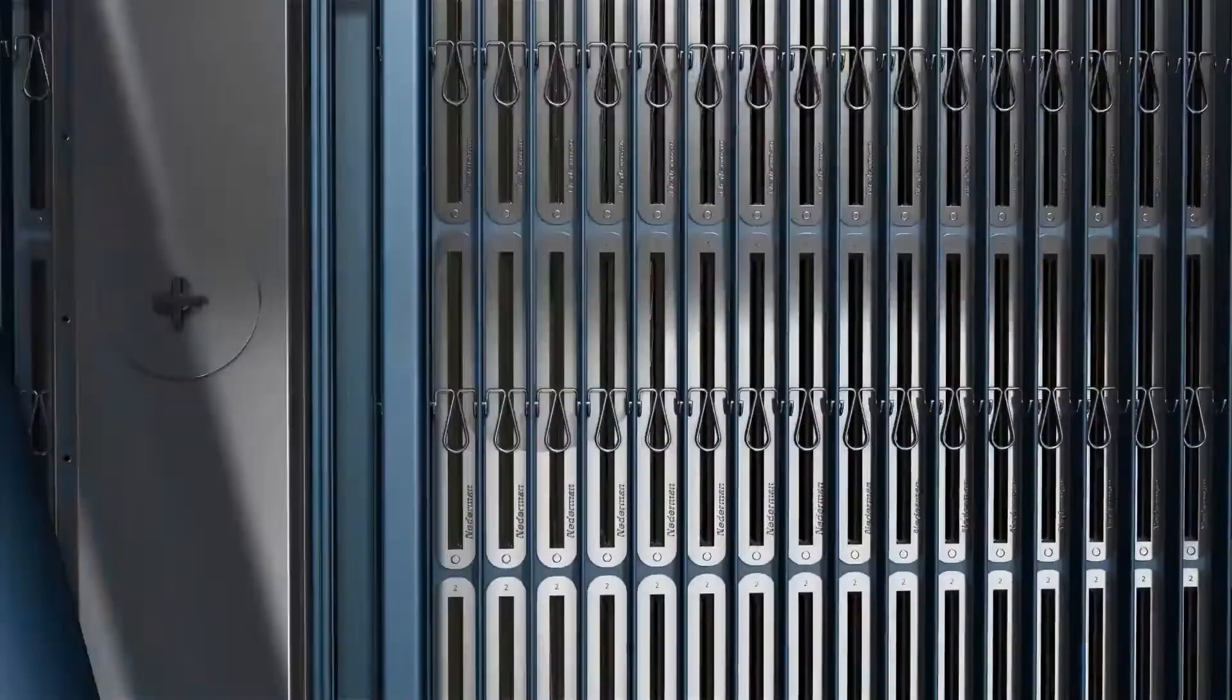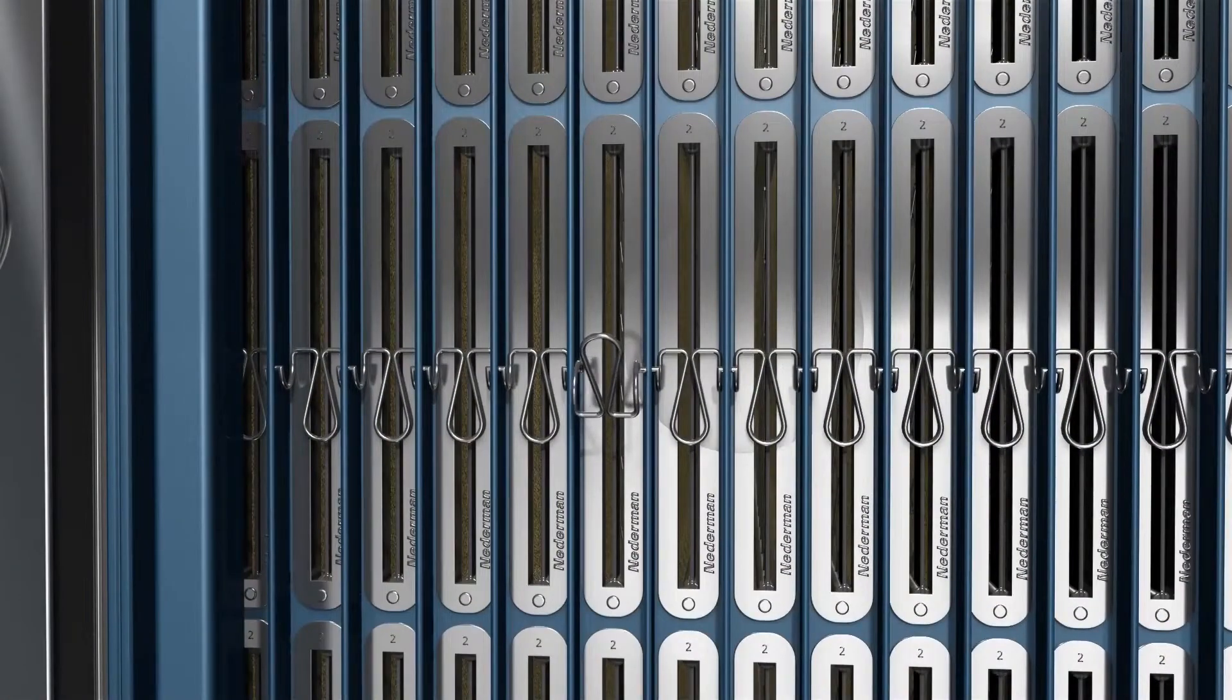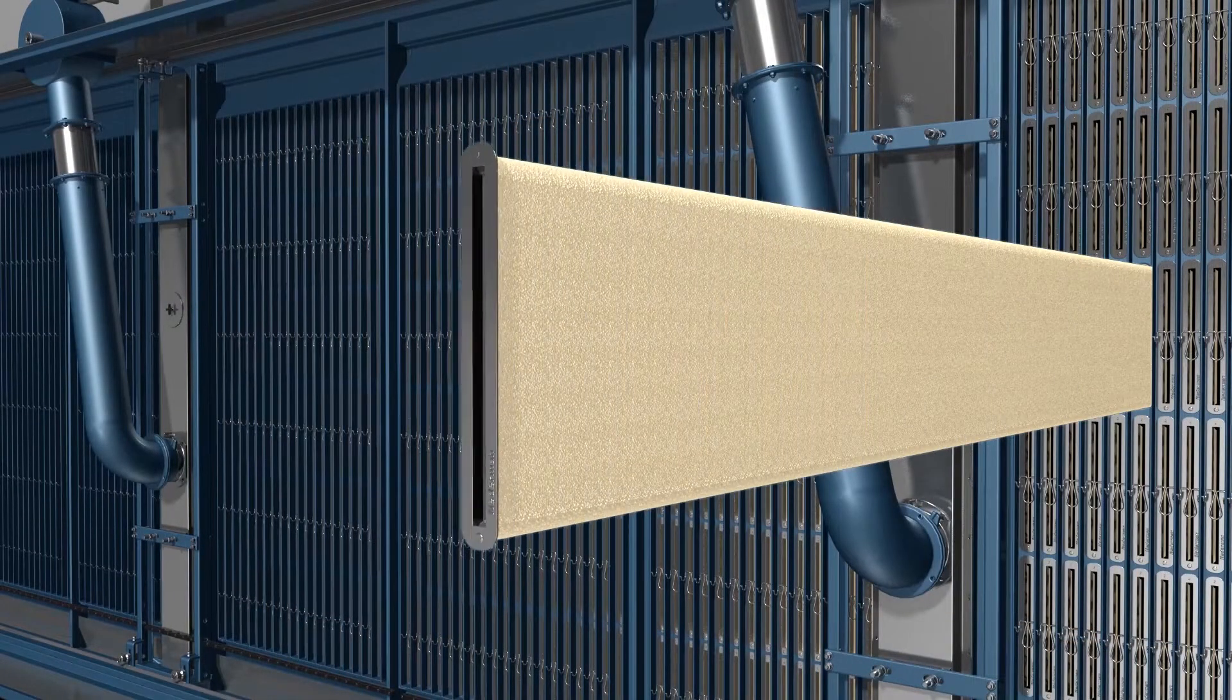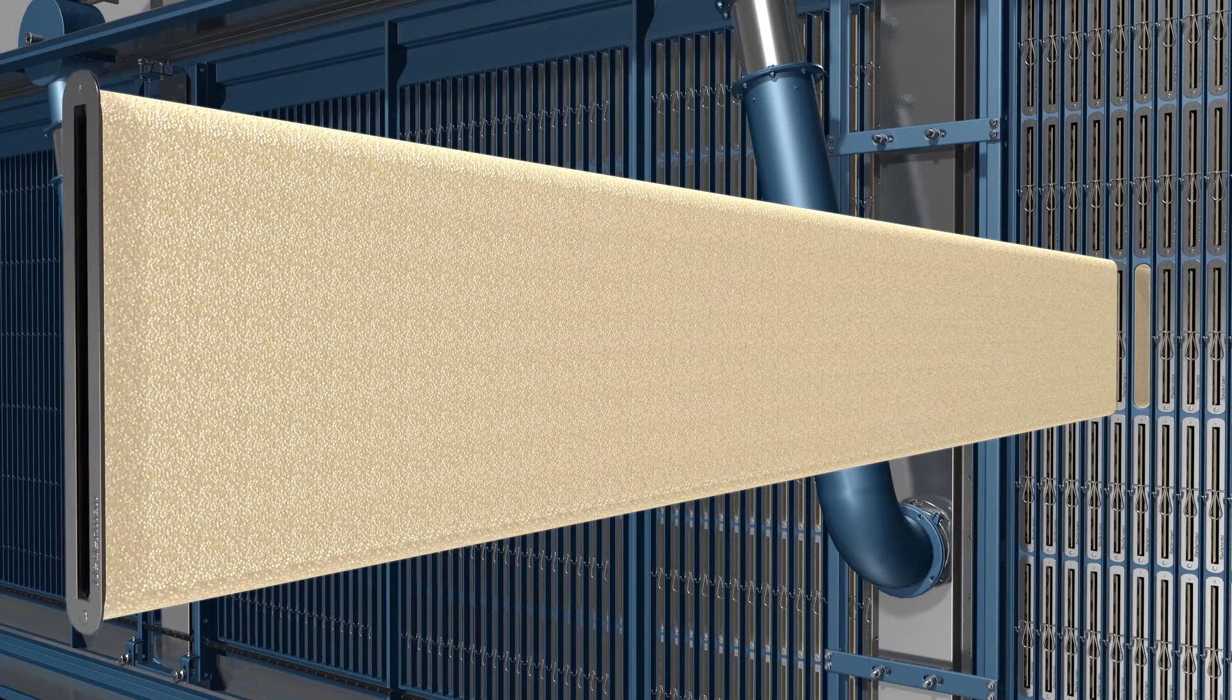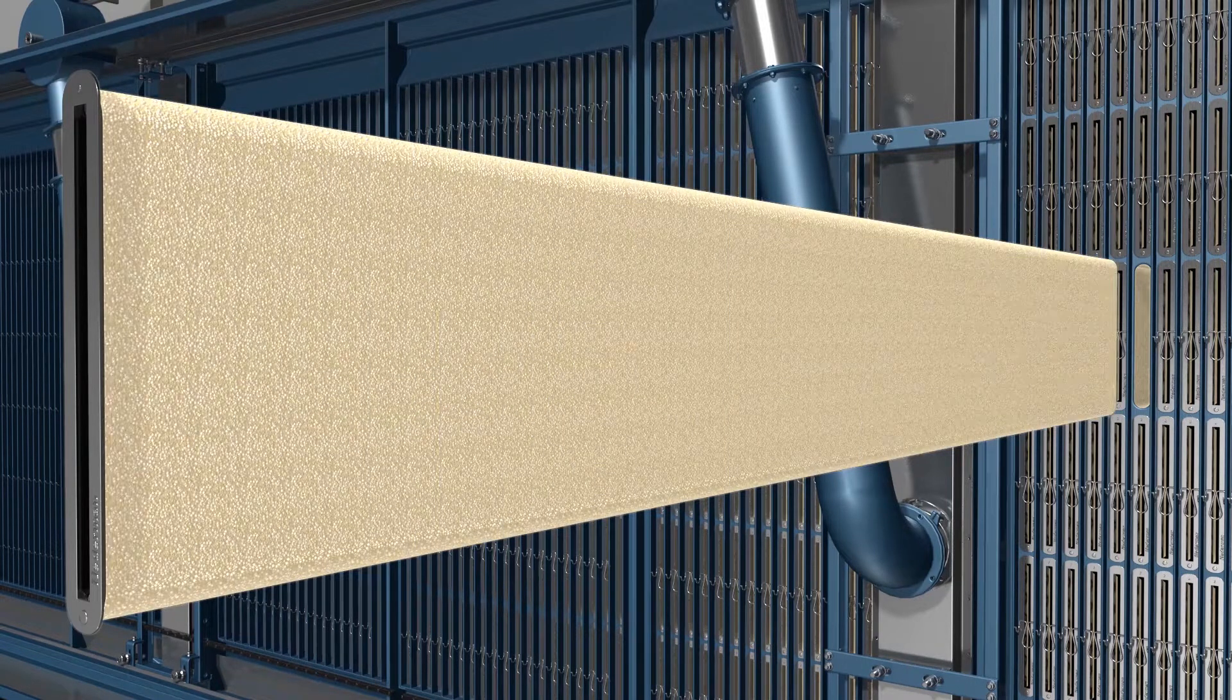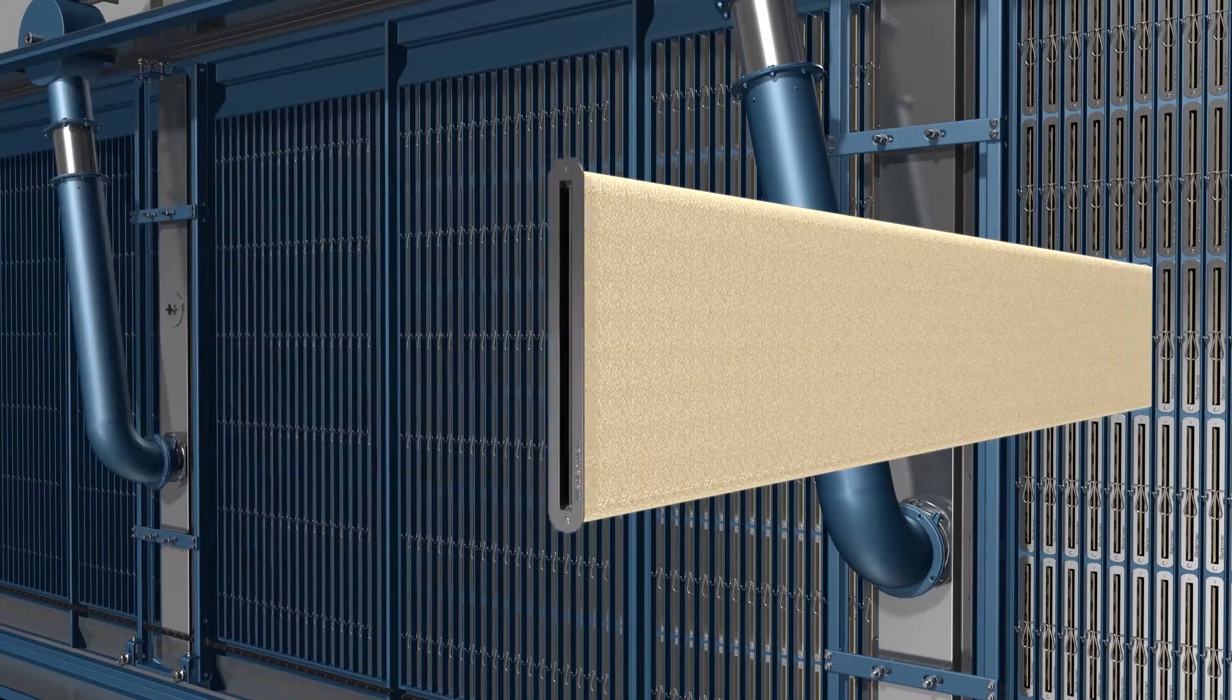Maintenance staff can access the filter bags on the clean air side of the filter. The leg spring is loosened and the filter bag along with the spacer mat can be removed. This makes the maintenance of the filter bag safer and easier compared to a top removal of filter bags in typical PulseJet filters.